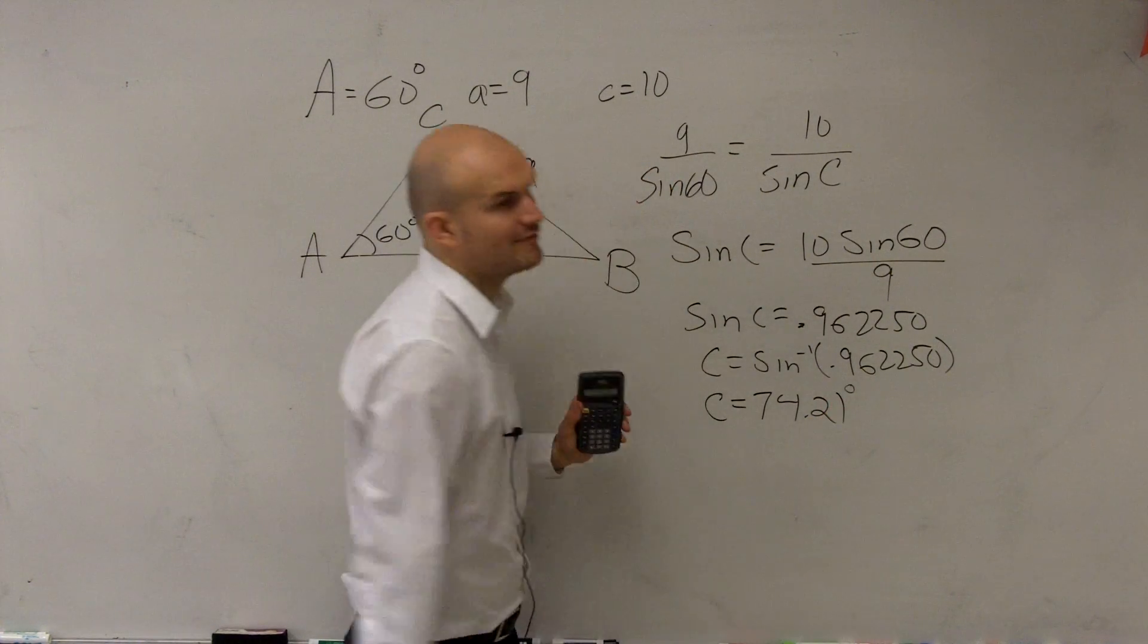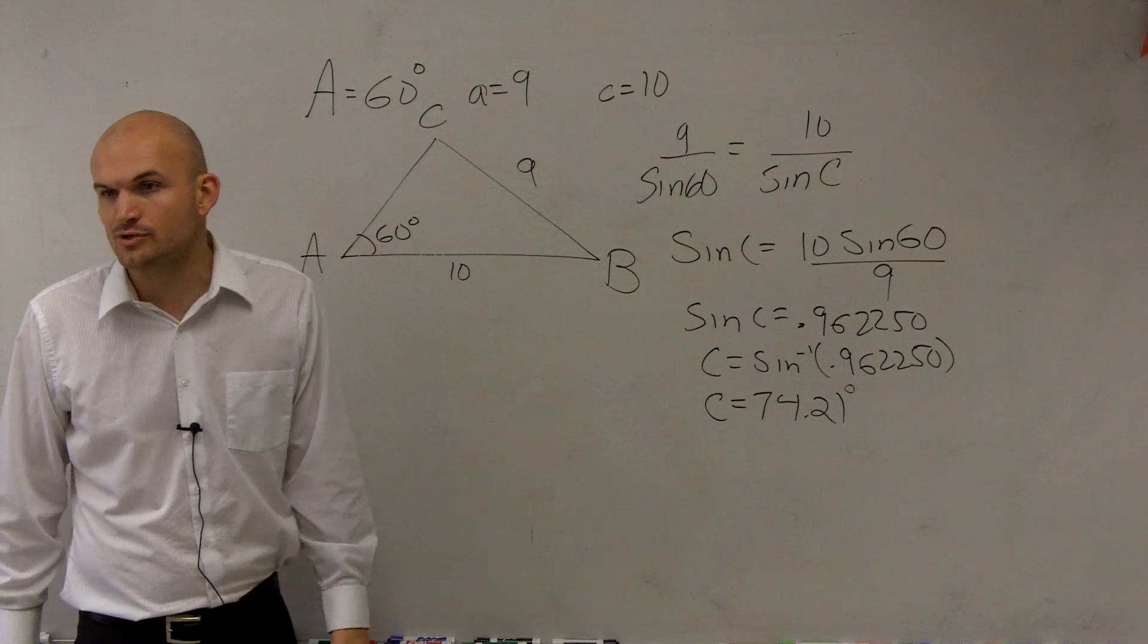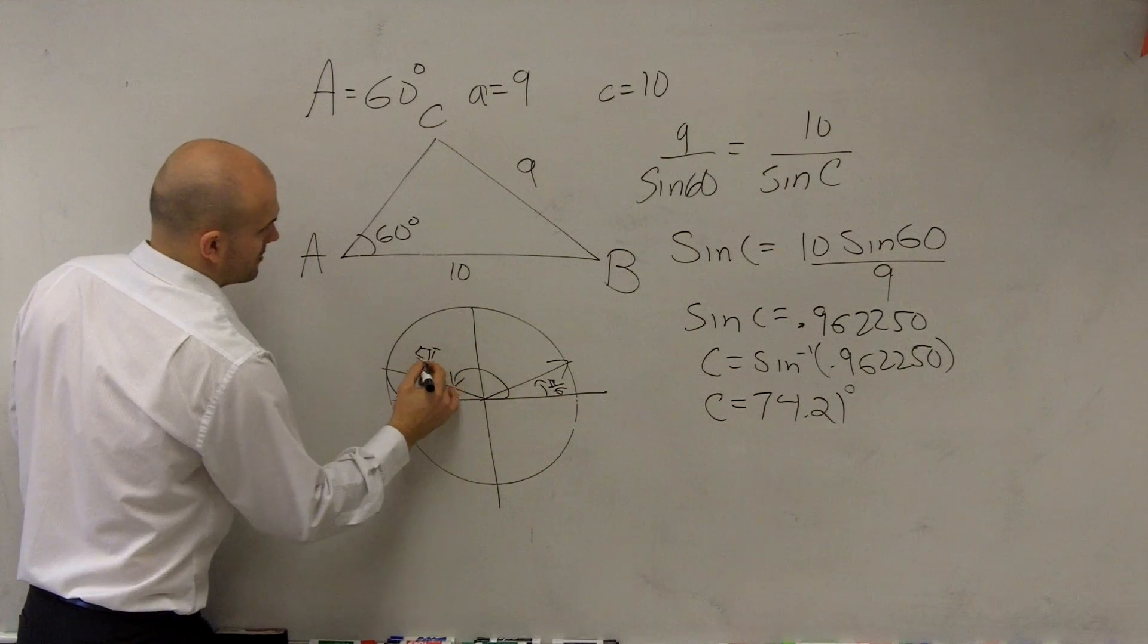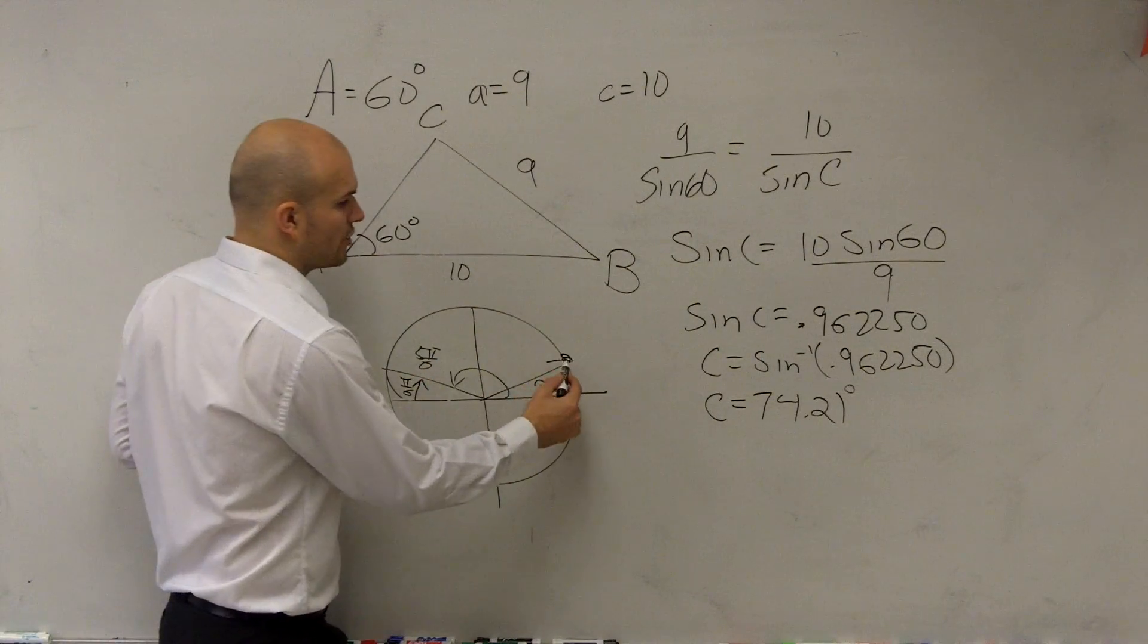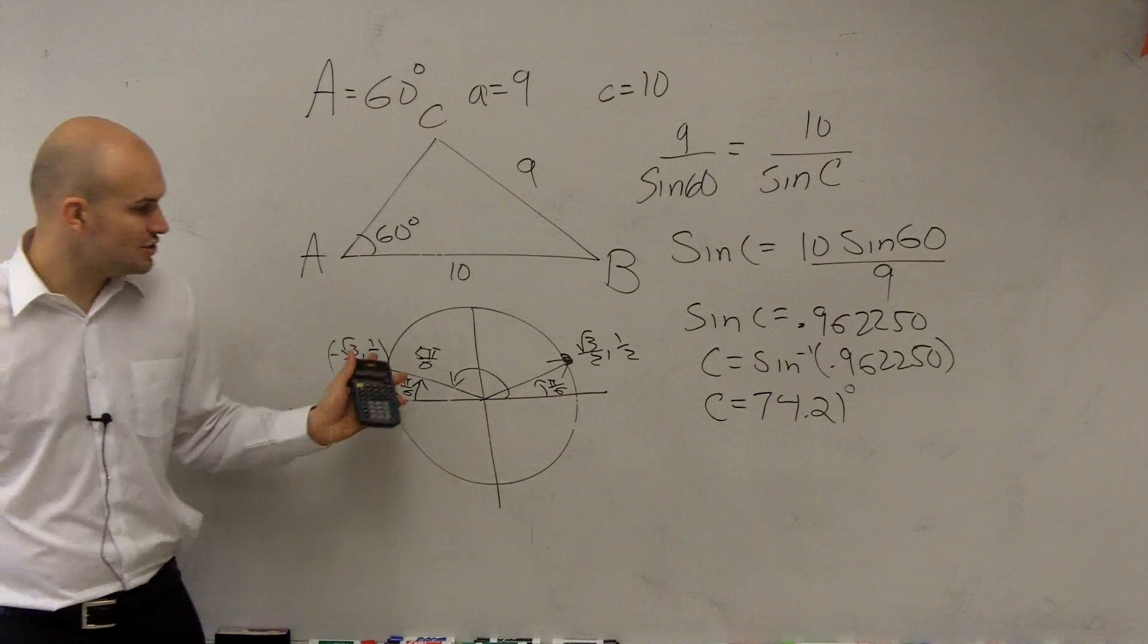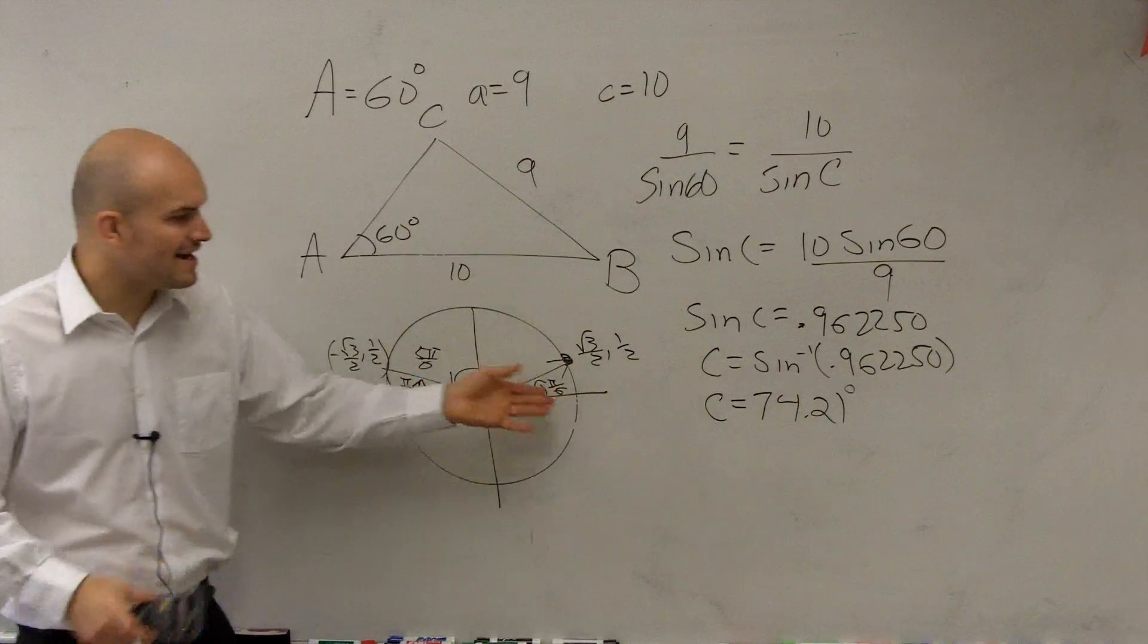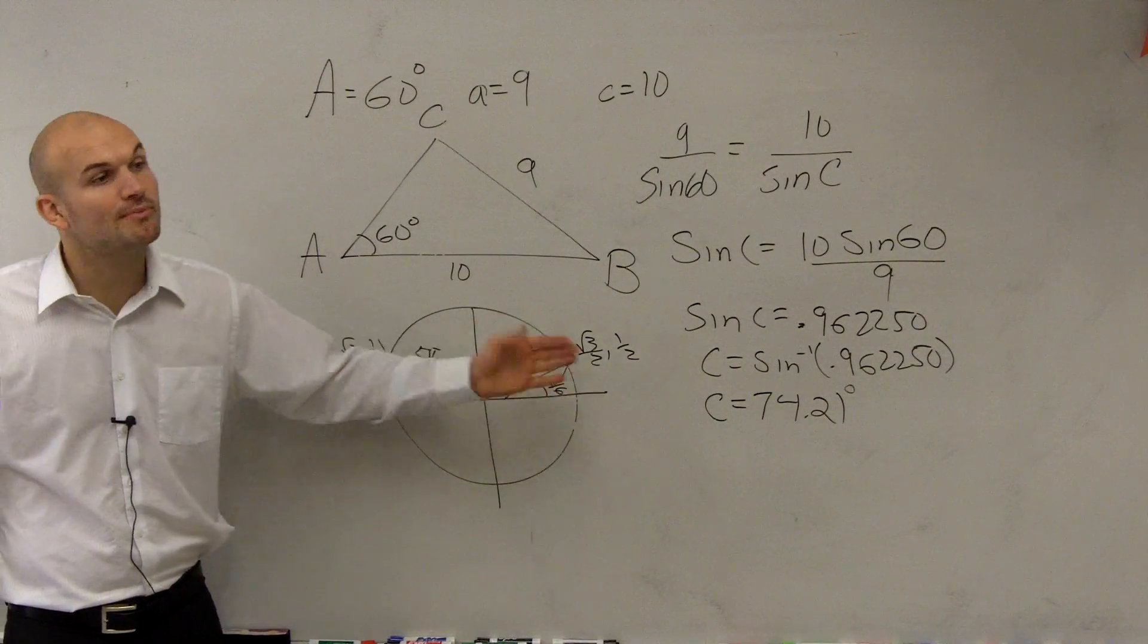So now I have c equals 74.21 degrees. But, ladies and gentlemen, this is getting a little bit more difficult than just doing this one problem. So, what you're going to look at is, it could be 74.21. But what I want you guys to understand is, let's go back to our unit circle. And let's look at two angles. Let's look at pi over 6 and let's look at 5 pi over 6. Now, notice the reference angle. These are both pi over 6 off of the x-axis, right? Now, let's take a look at our coordinate points. This is square root of 3 over 2 comma 1 half. This is negative square root of 3 over 2 comma 1 half. What do you guys notice? Do you notice that for each of these angles, pi over 6 and 5 pi over 6, the sine is exactly the same, correct? The sine is exactly the same.